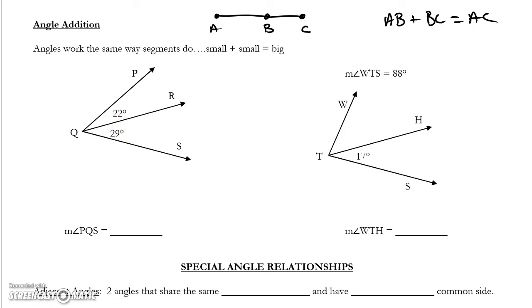Angle addition, it's just that we're talking about angles instead of segments. Here, I have a small angle here, and I have a small angle here. If I take this angle, 22 degrees, plus the other angle, 29 degrees, those two together add up and make up the entire angle, which in this case would be 51 degrees. So, the measure of angle PQS, start at P, go to Q, go to S. That's angle PQS. 51 degrees.